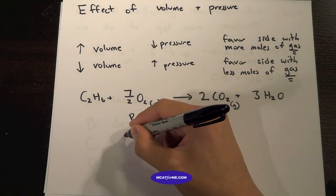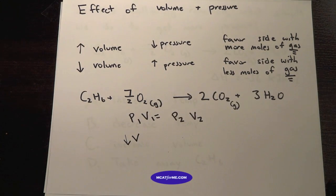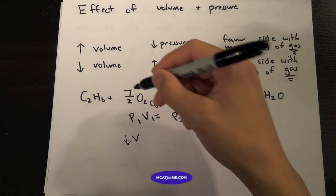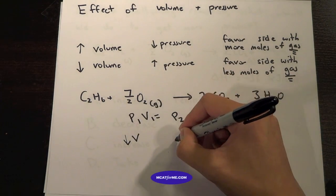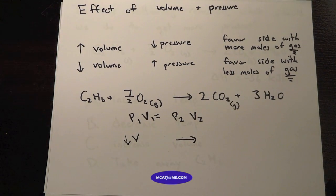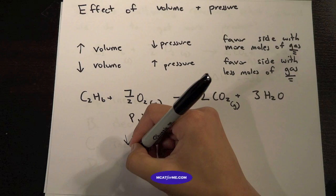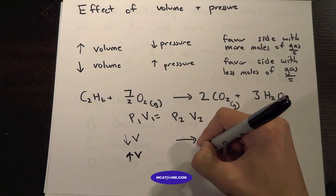So let's see, if we decrease the volume, we're going to want to go to the side with less moles of gas. So this is 3.5 and this is 2. So go to the right. And if we increase the volume, we want to go to the left.